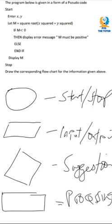So these are the basic shapes you must know when it comes to flowcharts: a circle, a parallelogram, a diamond, and a rectangle. You should know their main uses. That covers the basics — let's go to the question.